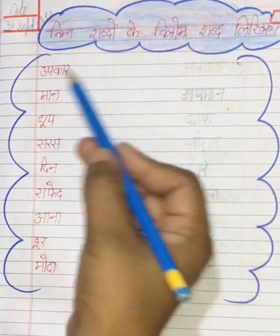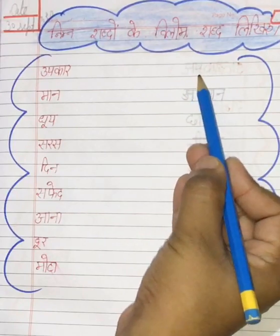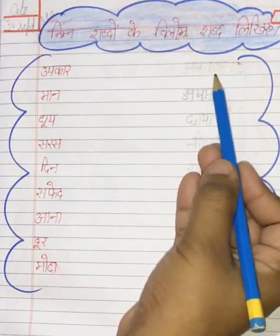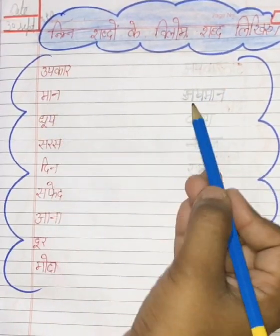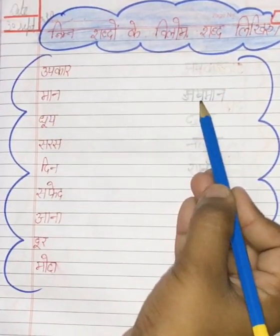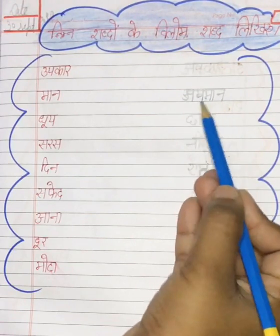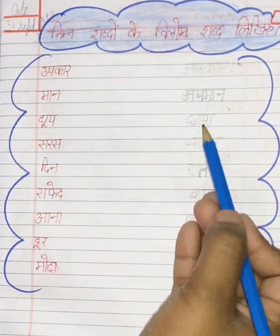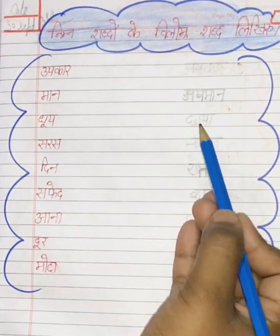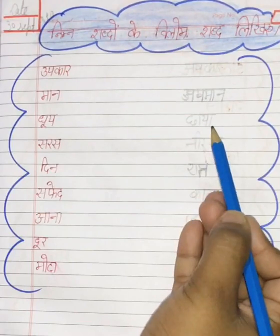तो आपको बनाना है। उपकार कैसे बनाएंगे? A-P-K-A-R — अपकार। मान का विलोम — A-P-M-A-N — अपमान। धूप का विलोम क्या बन जाएगा? C-H-H-A-Y-A — छाया।